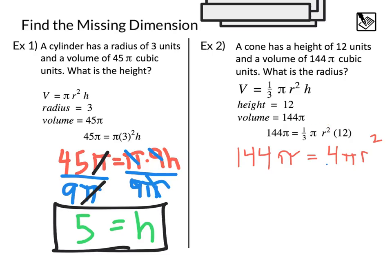From here, we can divide by 4 pi to start getting our radius isolated, which is what we're wanting to solve for. That gives us 144 divided by 4 is 36. We can see that these pi's are going to cancel each other out. The 4 and the pi's will cancel each other out. Then we're left with 36 equals r squared. Well, 36 is r squared, so what number squared is going to be 36? And that gives us a radius of 6 units.